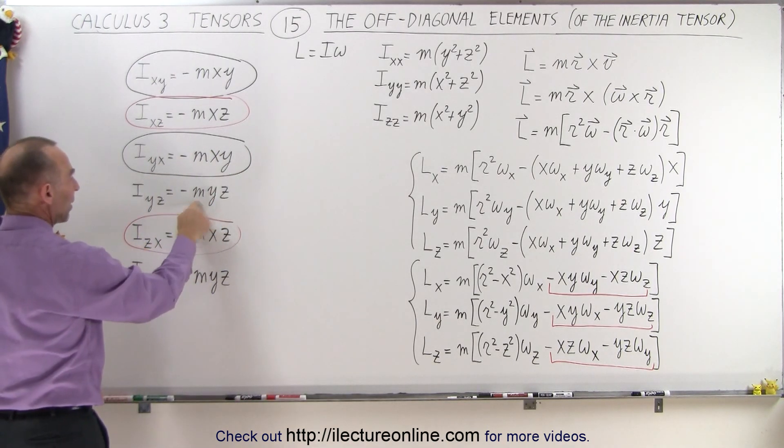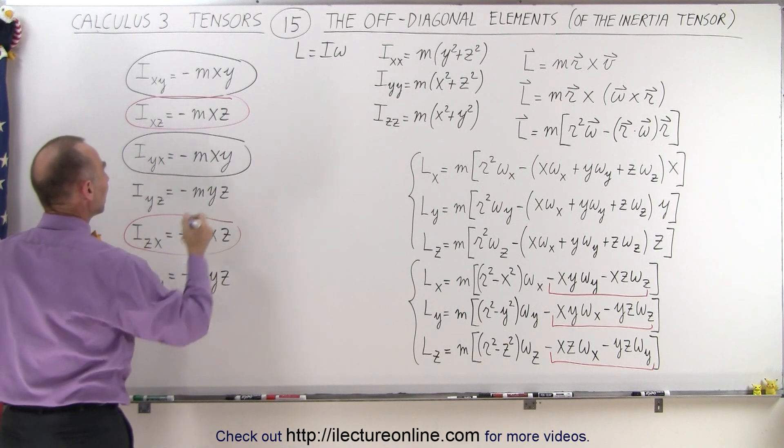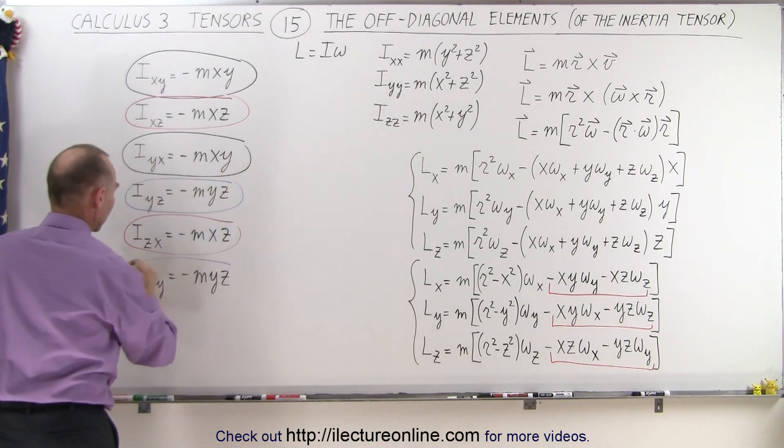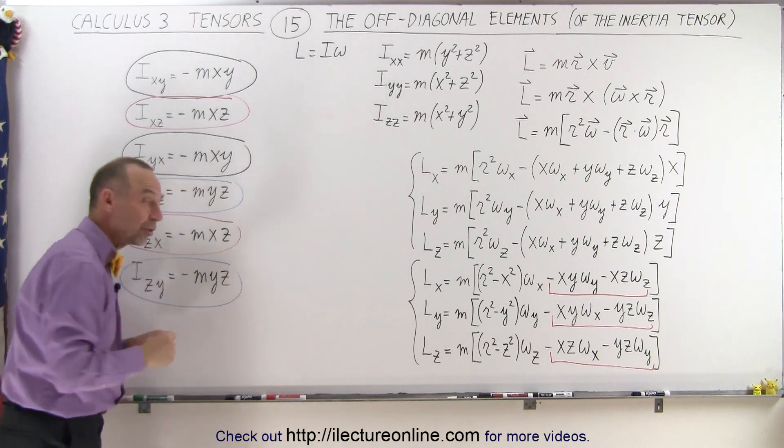And then we can see we have a minus myz and a minus myz. These two terms are the same as well. And you can see that there's actually three pairs.